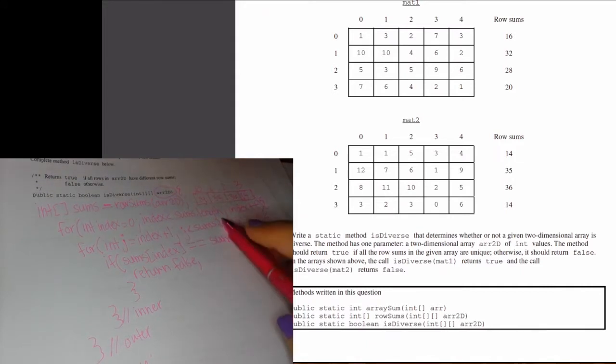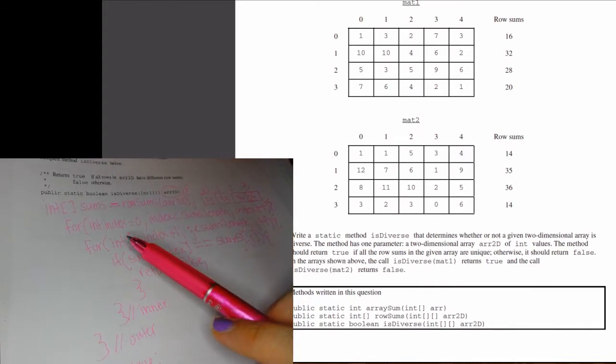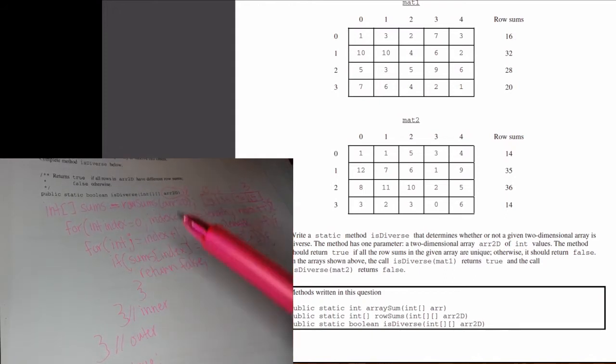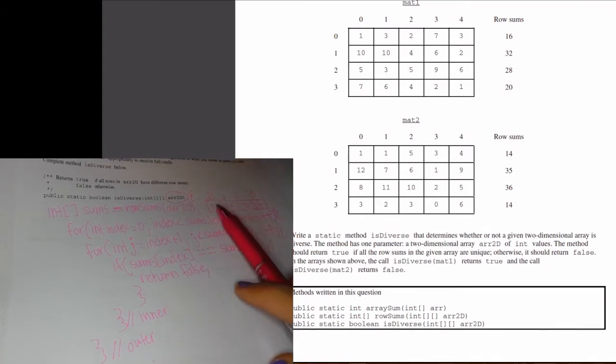Now, had we not found a match between any of these elements, we would have eventually exited out of the inner for loop and exited out of the outer for loop and then return true is diverse. Since this is not a diverse array, we wound up returning false, exactly what we should have done. So here we go. I'll see you next time. Bye.